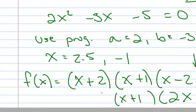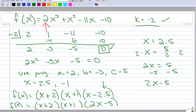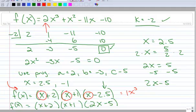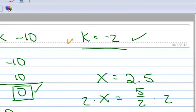So I can replace that last factor with 2x minus 5, and recopy the other factors. I like this version because my original polynomial has a leading coefficient of 2. If I multiply the first terms together — x times x times 2x — that gives me 2x cubed, which matches my leading coefficient. That's how you find a fully factored form given one of the zeros, and how you turn a decimal or fraction into a factor that gives the correct leading coefficient.